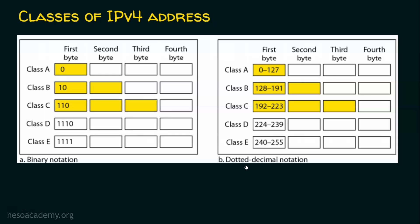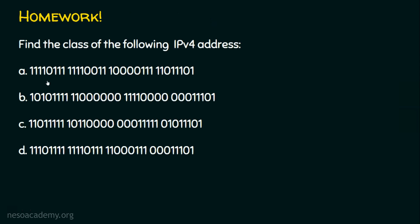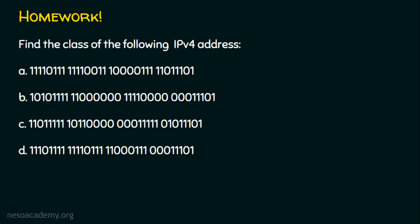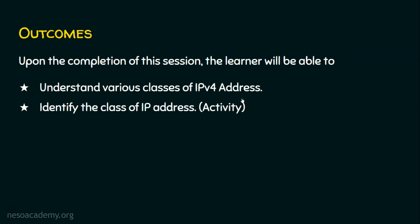The question may be given in either dotted decimal or binary notation. Now let's see the homework question: find the class of the following IPv4 addresses — four addresses are given this time in binary notation. Observe the bits in the first octet and find the class. Pause the video, take the help of this slide, try solving the problem, and post your answers in the comment section. I hope you now understand the various classes of IPv4 addresses and can identify the class whether given in binary or dotted decimal form. Thank you for watching.